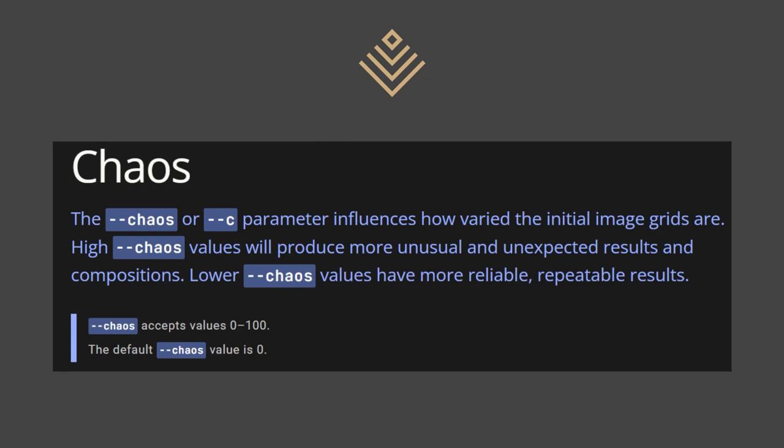What is chaos? The chaos parameter influences how varied the initial image grids are. The higher the value, the more unusual and unexpected results and compositions. The lower the value, the more reliable and repeatable results. The default chaos value is zero, so if you do not add chaos, it is going to be the most reliable and repeatable results. Let's see what happens in action when I add chaos.